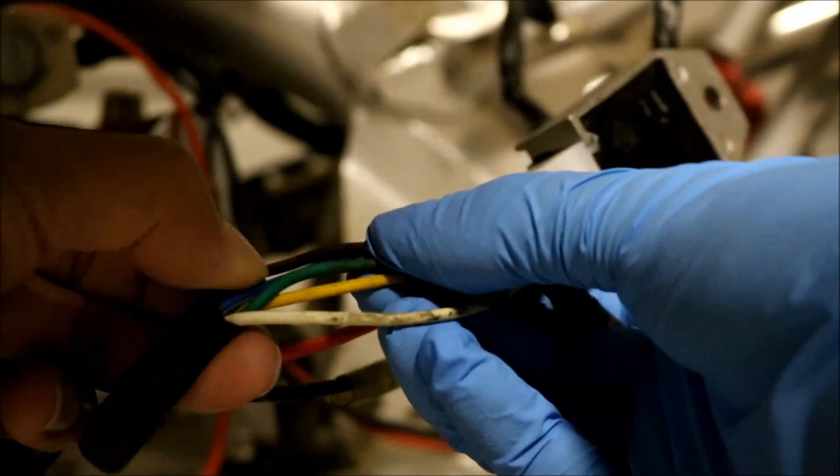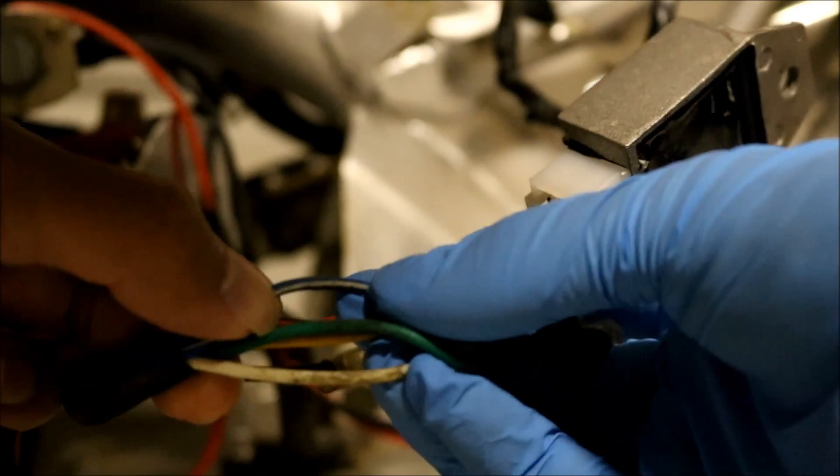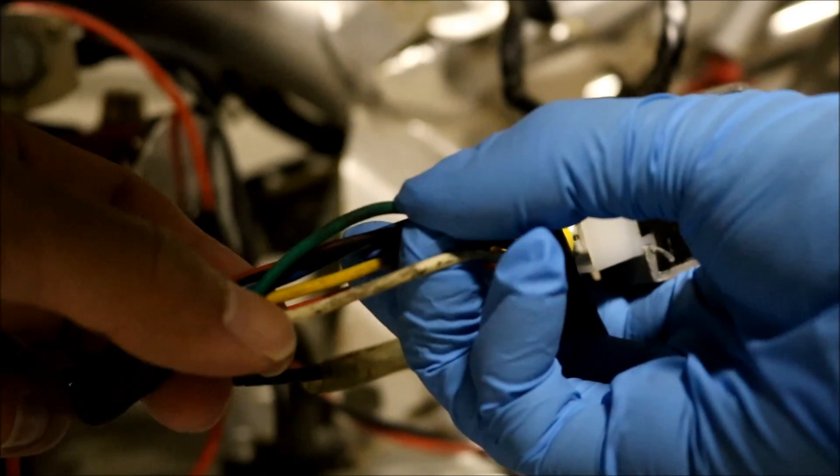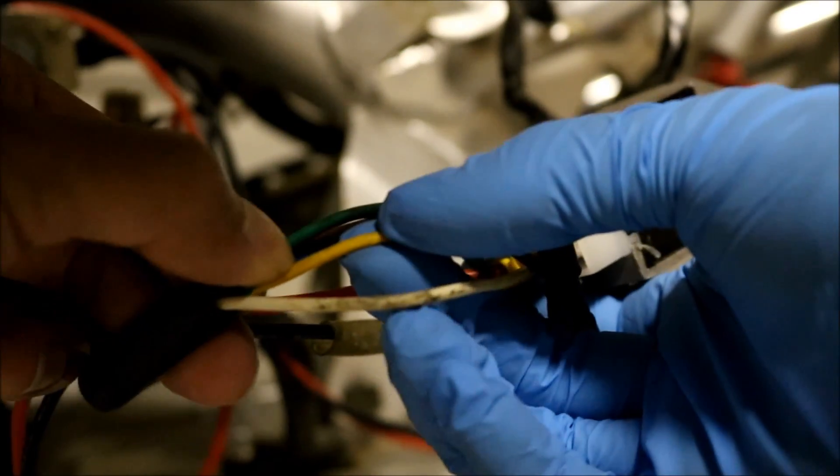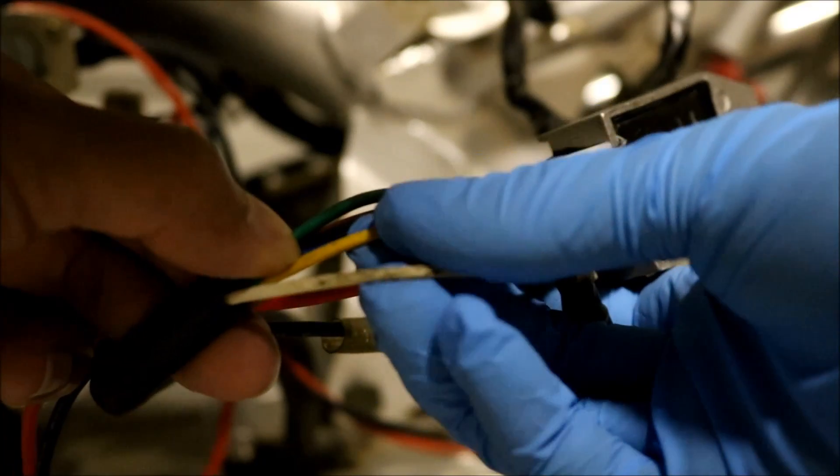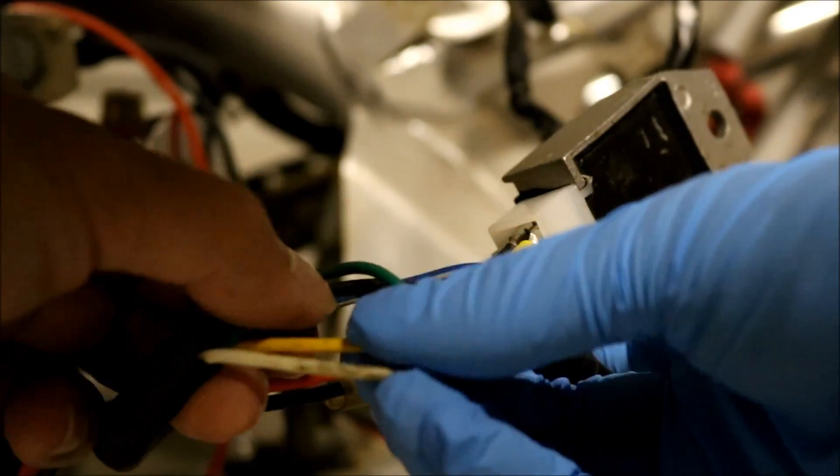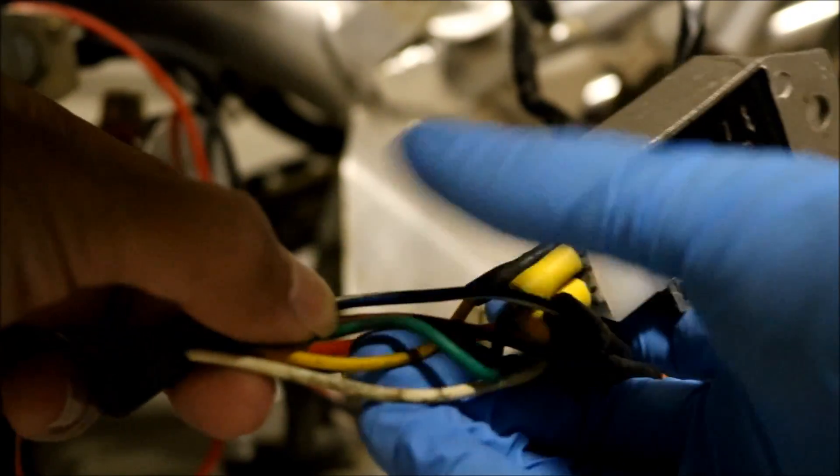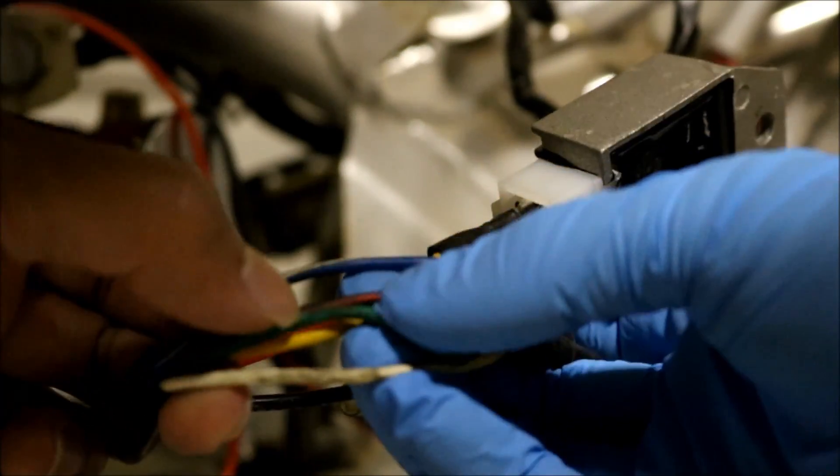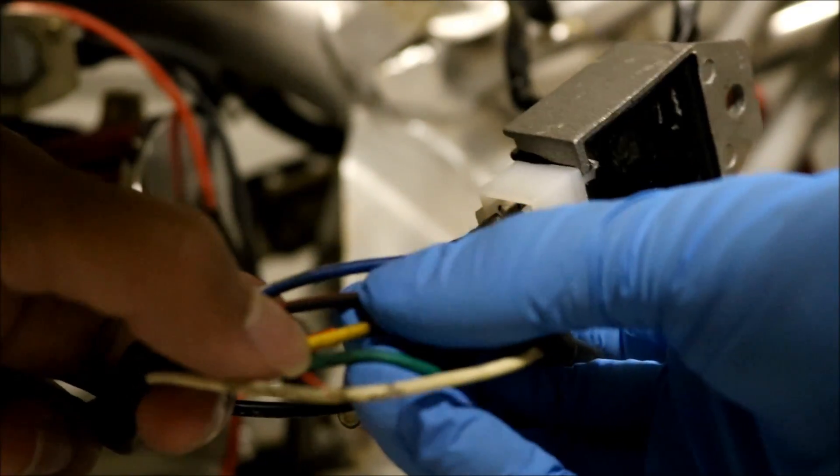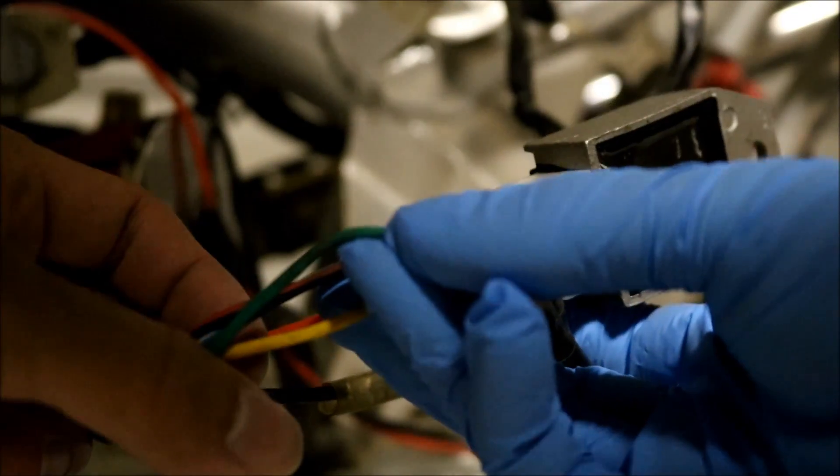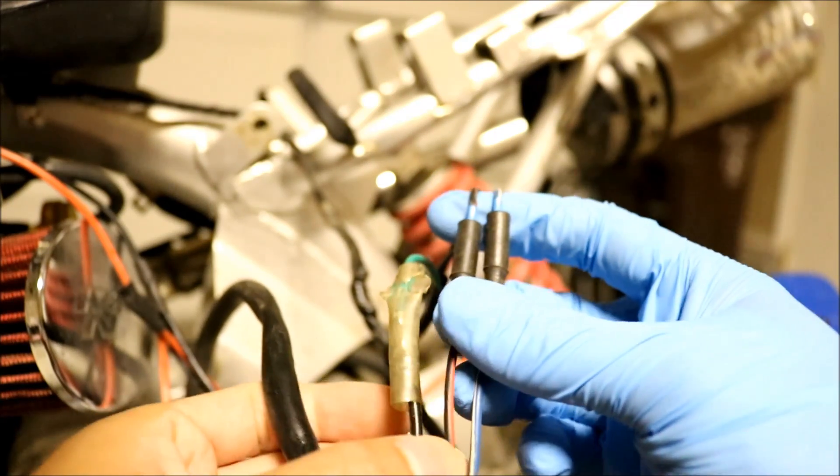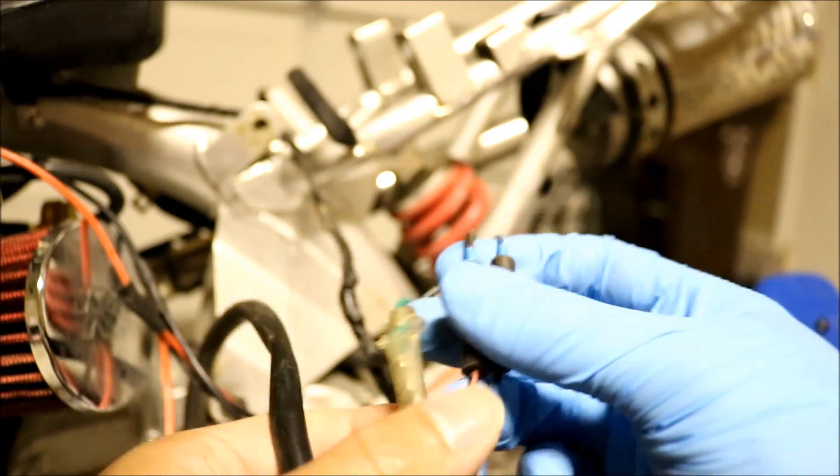So the first wire is the black and red. Second is blue and white. Third is your ground, the green. And then you have your yellow and then your white, the yellow and white. When I first bought the bike it didn't have lights, so these were just dangling, weren't connected to anything. All you need to run the bike is the blue and white, the black and red, and the ground.